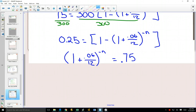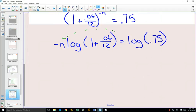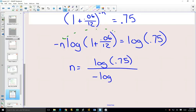And now that I have the power by itself, I can take the log of both sides. And when I take the log of both sides, that exponent that was there can come out in front. So I'll have a negative n in front. And now to get n by itself, I would have to divide.